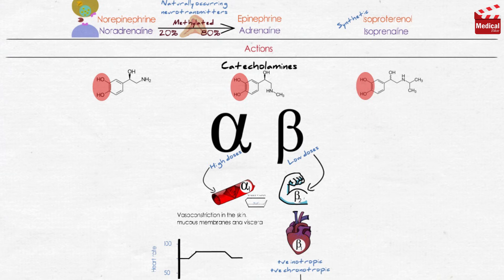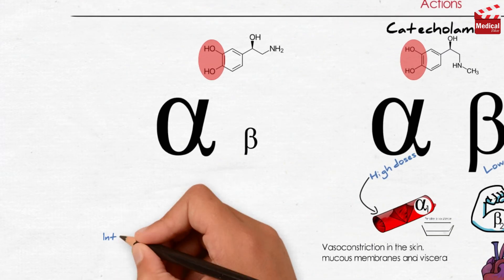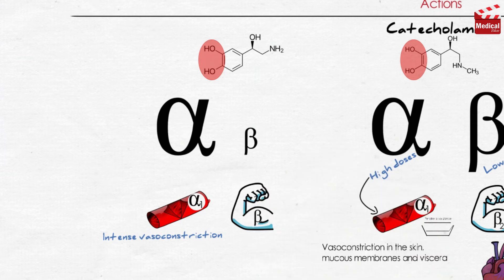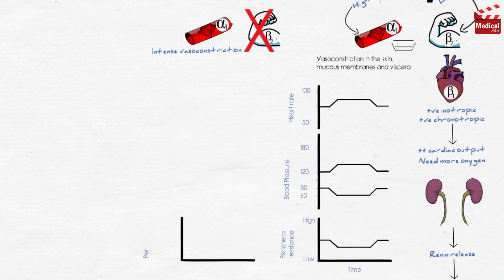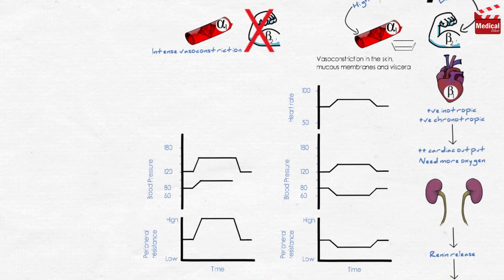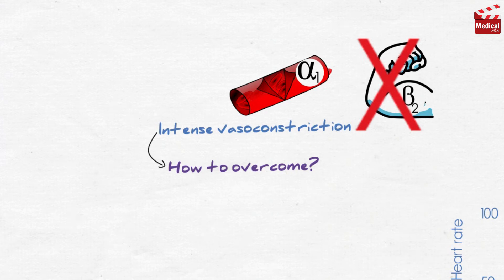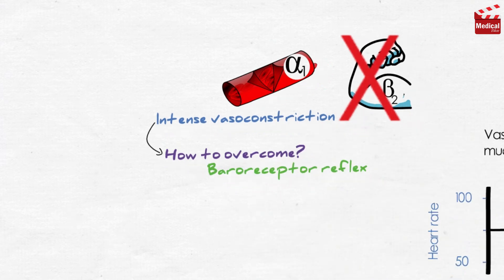Norepinephrine is supposed to work on alpha and beta receptors as it is the neurotransmitter of adrenergic nerves, but actually it works mostly on alpha receptors with slight effect on beta receptors. We can conclude that norepinephrine causes an intense vasoconstriction by acting on alpha-1 receptors, with no compensatory vasodilation via beta-2 receptors on blood vessels supplying skeletal muscles, leading to a rise in peripheral resistance. Both systolic and diastolic blood pressures increase. To overcome this intense increase in blood pressure, the body responds with the baroreceptor reflex.